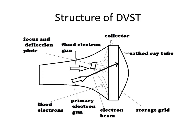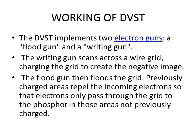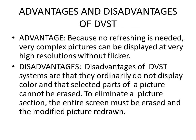When the flood electron gun transmits the electrons, the image is created in the proper way. The focus and deflection plates deflect the flood electrons and put them in a proper position. In the working of DVST: the writing gun scans across a wire grid, charging the grid to create a negative image. The flood gun then floods the grid — previously charged areas repel the incoming electrons, so electrons only pass through the grid to the phosphor in areas not previously charged.